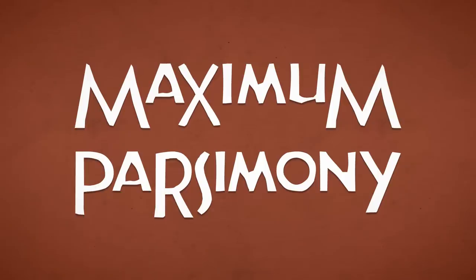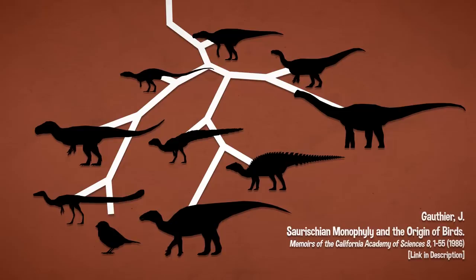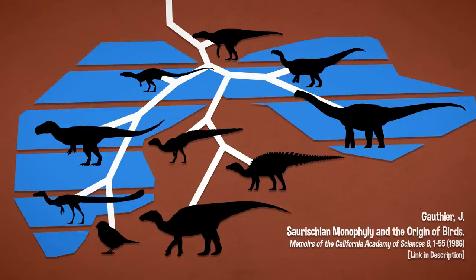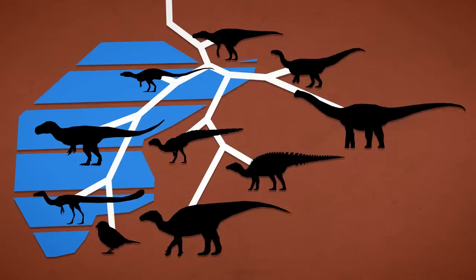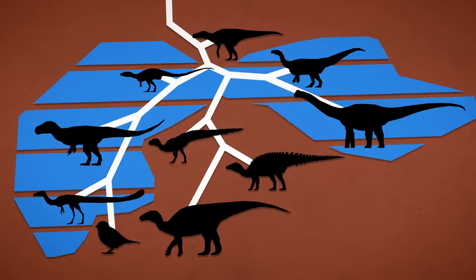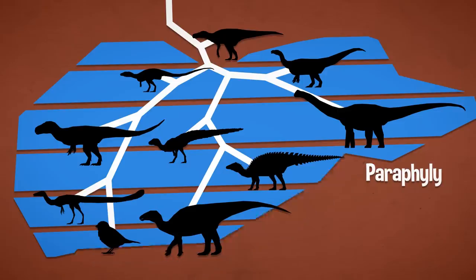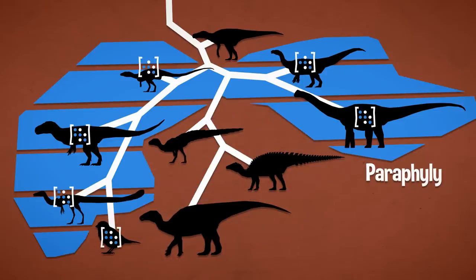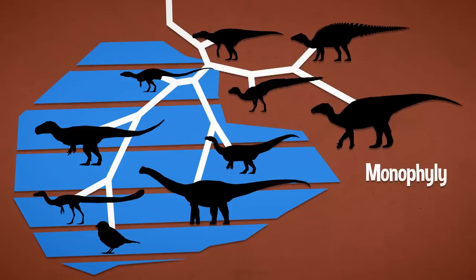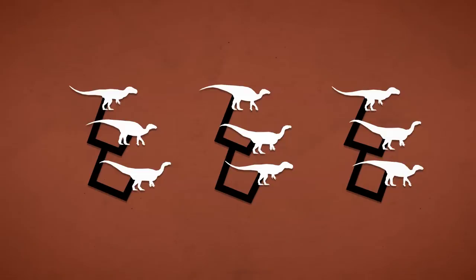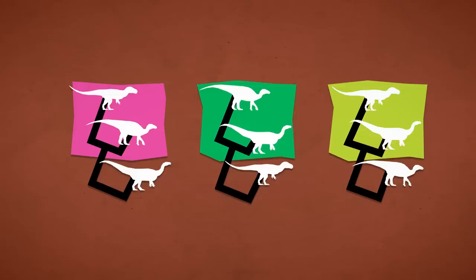In 1986, Jacques Gauthier published Saurischian Monophyly and the Origin of Birds. His primary concern was the latter part of that title; he just happened to find the definition of Saurischia at the time inadequate to his needs. Contemporary thought had theropods as non-sauropod saurischians and saurischians as non-ornithischian dinosaurs — in cladistic terms, saurischians were stem-ornithischians. This is called paraphyly: you take a monophyletic group, carve out some of its taxa, and give a name to whatever's left over. The group has no synapomorphies that don't also apply to a more inclusive group. So Gauthier used phylogenetic analysis to test whether sauropodomorphs and theropods shared a common ancestor. He offered three hypotheses: Theropoda and Ornithischia, Ornithischia and Sauropodomorpha, or Theropoda and Sauropodomorpha are the most closely related groups, with the other one off by itself.